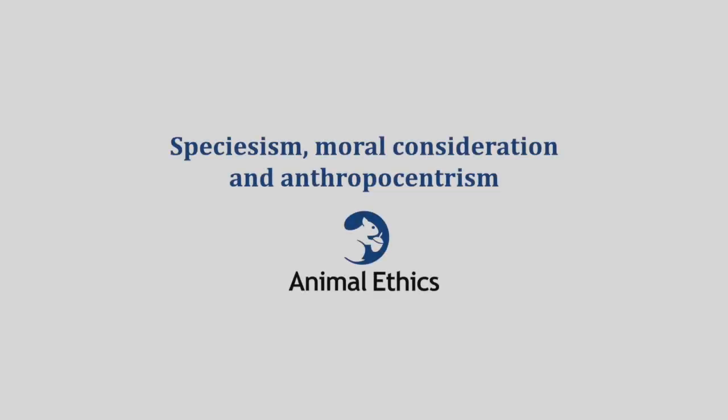In addition to being the name of our organization, animal ethics is a term for a field in ethics. It's about how we reflect on the way we should act towards non-human animals. The key issue in animal ethics is speciesism. In this section, we'll see what speciesism is, as well as some of the different forms of speciesism. In particular, we'll look at anthropocentrism, which is a form of speciesism that favors humans, and we'll examine some of the arguments people have used to defend it.